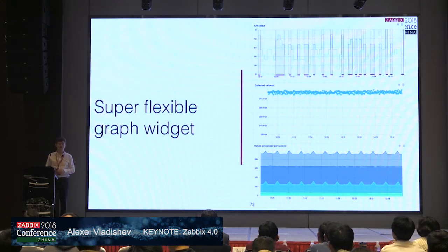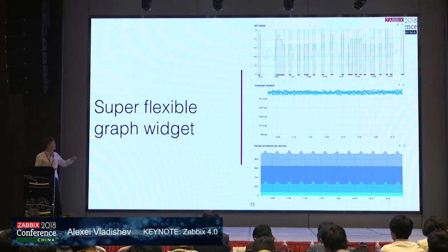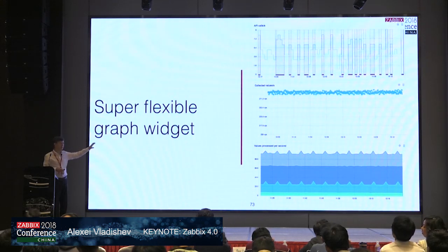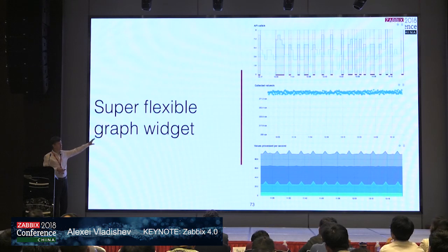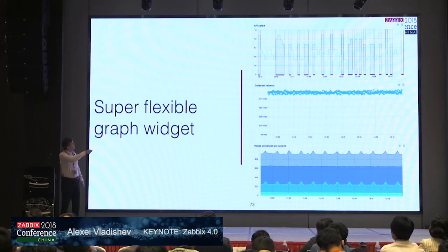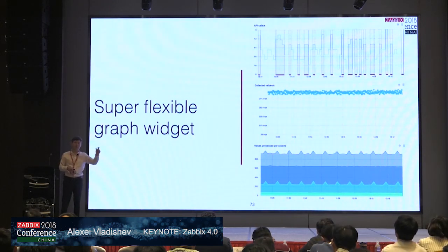A very flexible graph widget was introduced in 4.0. There will be another talk today about Zabbix's visualization possibilities, so I won't go into many details, but I want to mention that it's now possible to display graphs in a much more flexible way, and to display problems directly on the graph — showing problem periods so you can clearly see when a problem happened and when it ended.